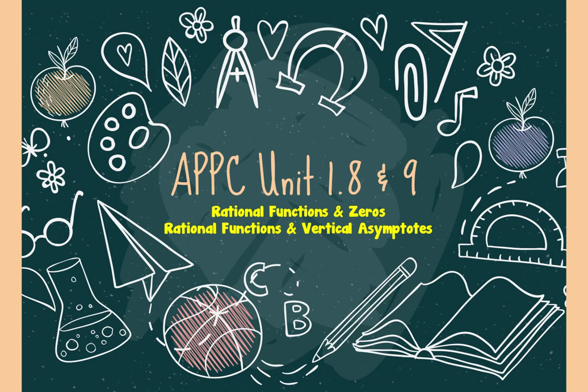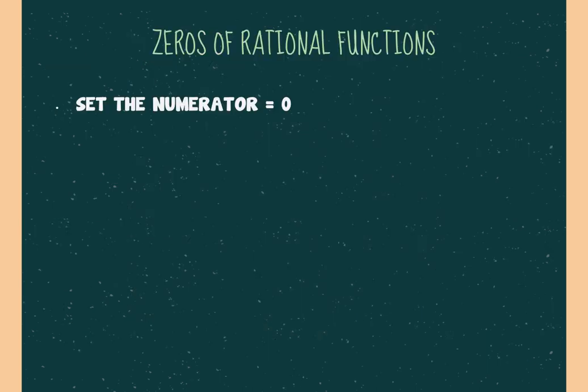We're doing 1-8 and 1-9 together because this is rational functions with zeros and vertical asymptotes. We're continuing with rational functions, except now we're finding the zeros, and then we're going to find the vertical asymptotes.